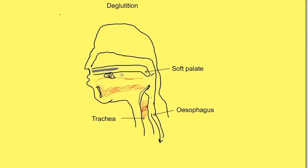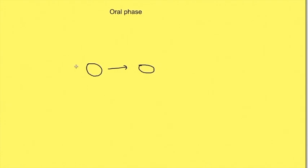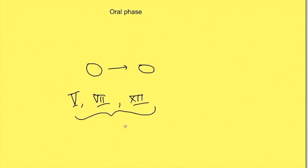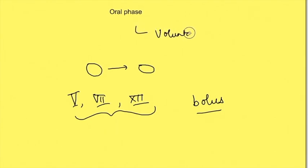In the oral phase, the tongue pushes against the palate, separating a part of the bolus from the food in the mouth, so the bolus reaches the posterior pharyngeal wall. For the oral phase to function properly, the muscles of the jaw, facial muscles, and tongue muscles must function properly. These muscles are supplied by the 5th, 7th, and 12th cranial nerves, so these cranial nerves should be intact. The size of the bolus formed is also important.